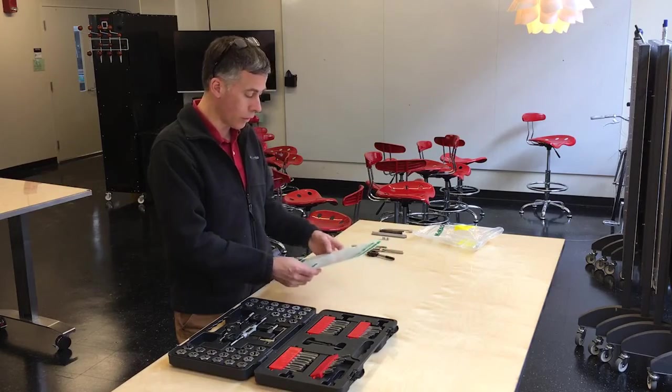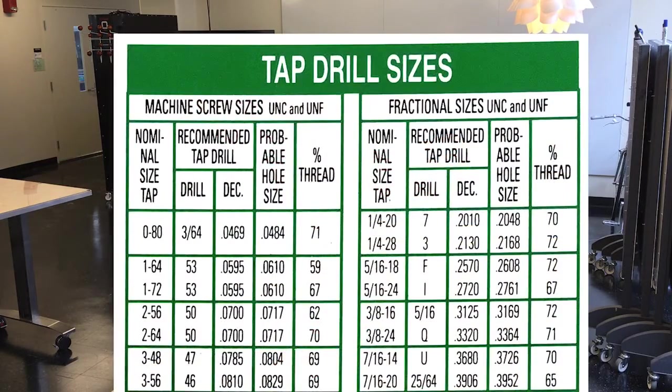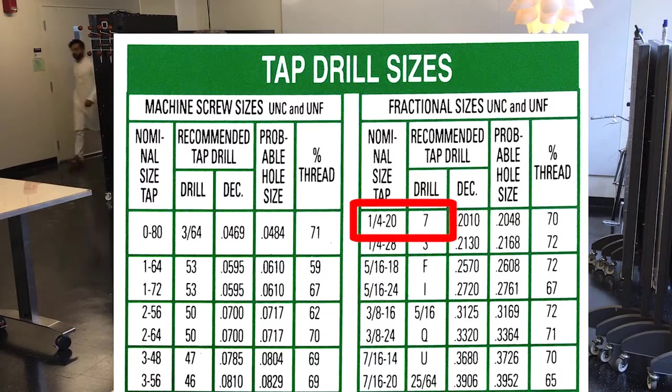So to make quarter-twenty threads, I'm looking at my chart here, and it says I need a number-seven drill, which is another way to call a drill a different size using sort of an old-fashioned system where we have letter size, number size, fractional size drills, and they're all different sizes. And you have this magical chart here that shows you what each individual size is.